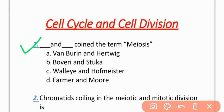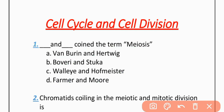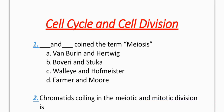MCQ 1: Who coined the term meiosis? Option A: Van Beren and Hardwick. Option B: Bouverie and Stuga. Option C: Vallier and Hofmeister. Option D: Farmar and More. The correct option is D — Farmar and More.